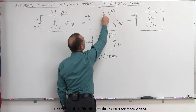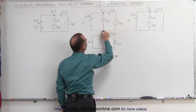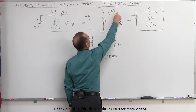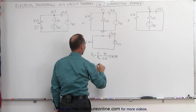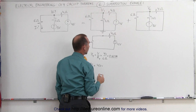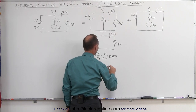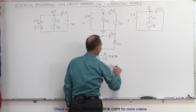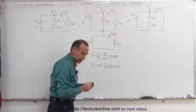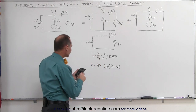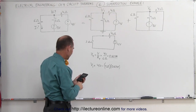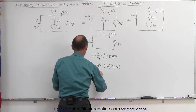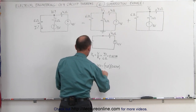We can find V1 by noting that if one end is at 0 potential and the source is at 4 volts, we look at the voltage drop from there to the node. V1 equals 4 volts minus the voltage drop across the 4 ohm resistor, which is 4 ohms times the current of 0.667 amps. Calculating: 4 minus 4 times 0.66666 gives V1 equal to 1.333 volts.